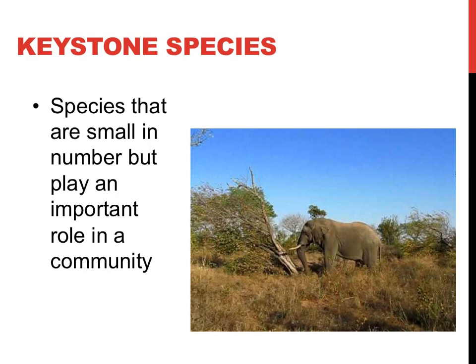Savannas are essentially very warm grasslands that are commonly seen in Africa. One major reason that savannas look the way they do, instead of being forested, is that elephants knock over trees to reach tall leaves and to gain access to carbohydrate-filled tree roots. If elephants didn't perform their job, the entire landscape would be drastically different.